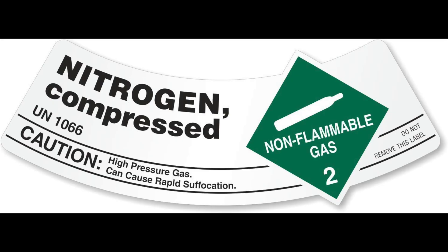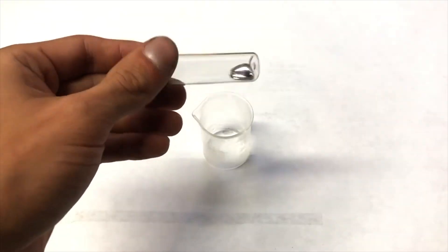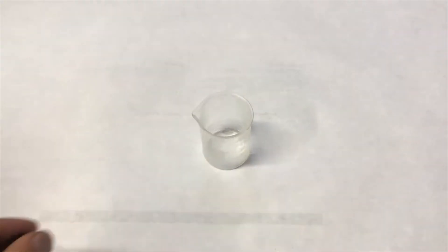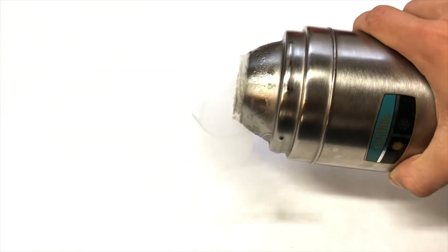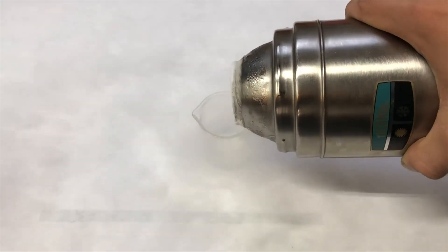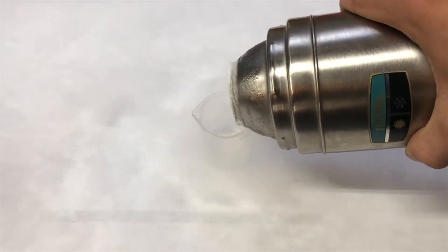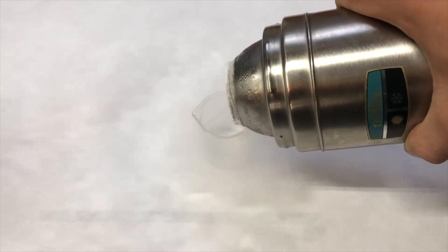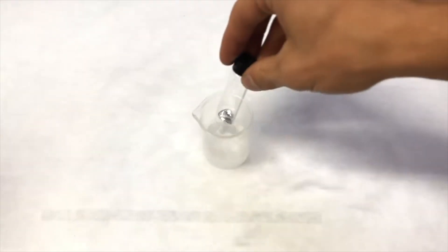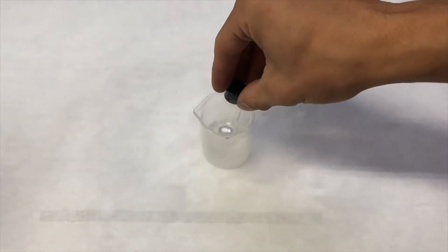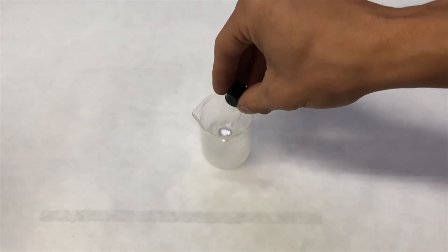You can purchase nitrogen in pressurized cylinders in a pure form, or you can buy it in liquid form such as liquid nitrogen. Liquid nitrogen is a beneficial material and makes cold temperatures very easily achievable for a household chemist. Liquid nitrogen comes in at a frigid temperature of negative 195.8 degrees Celsius, or negative 320 freedom units. This makes it great for rapidly cooling down projects or freezing different objects.